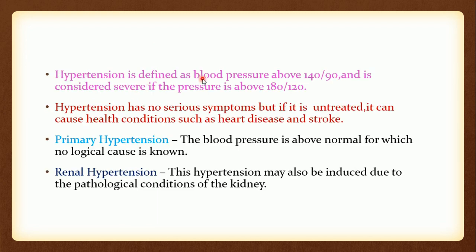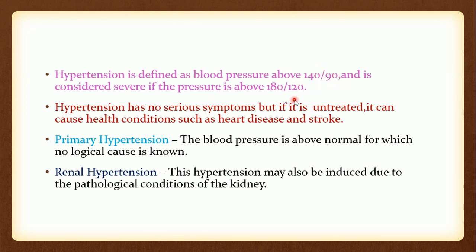Hypertension is defined as blood pressure above 140/90 and is considered severe if the pressure is above 180/120. The normal blood pressure is 120/80 mmHg. If it is above 140/90, then the patient is suffering with hypertension. If it is too high, the patient has to be on treatment.